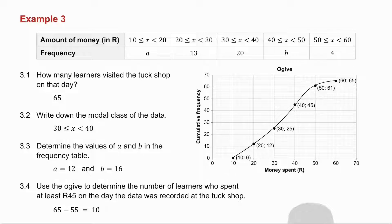3.3 asks you for the values of A and B. A is the number of people who fit into the first interval. So into the first interval, I go from 0 to 12. So A is 12. B is the number of people who fit into the interval 40 to 50. So I go from 45 to 61. In other words, B is 16.